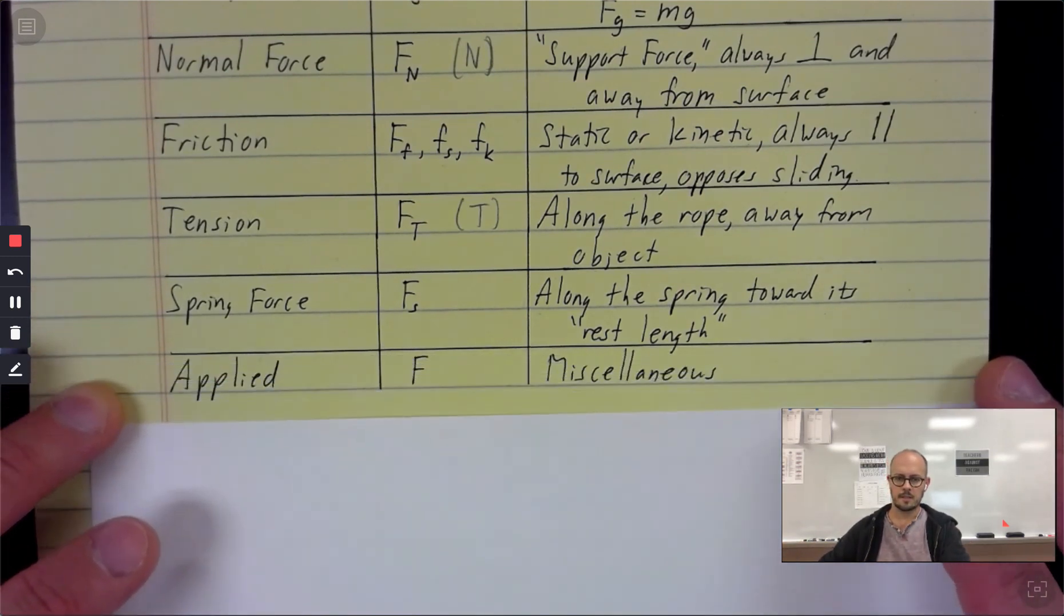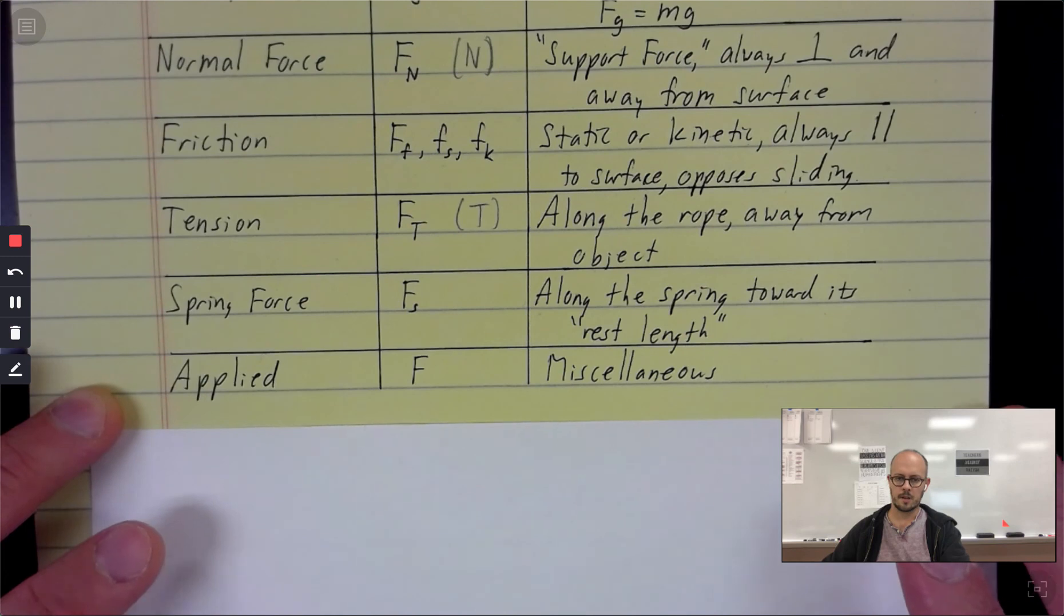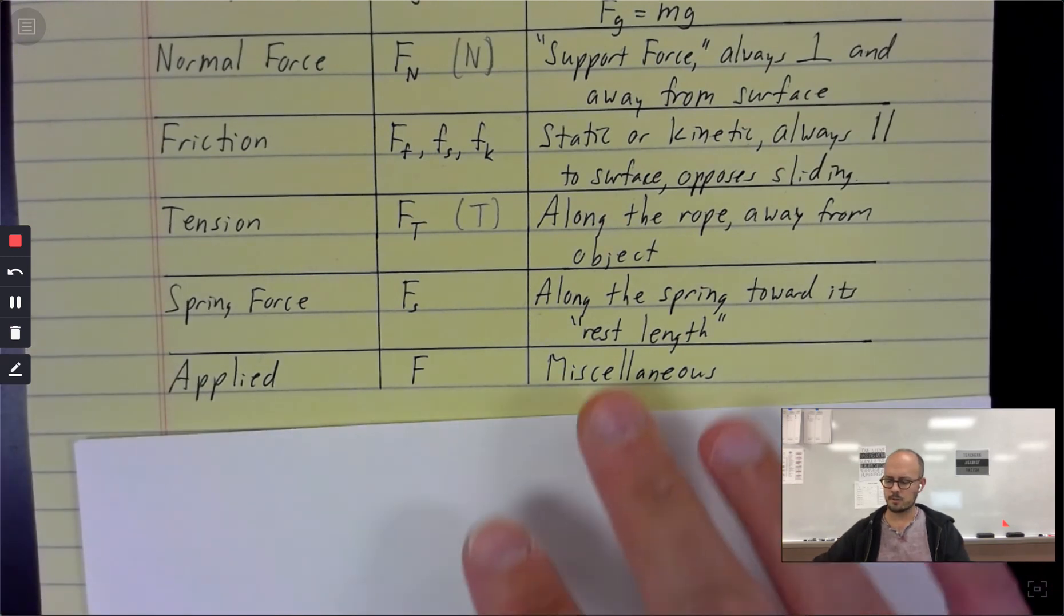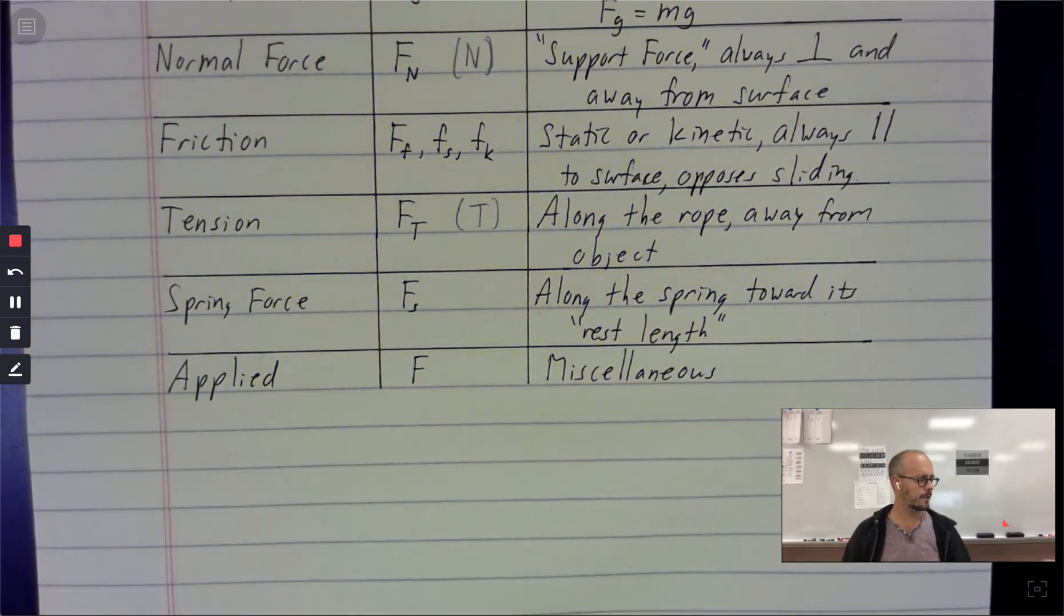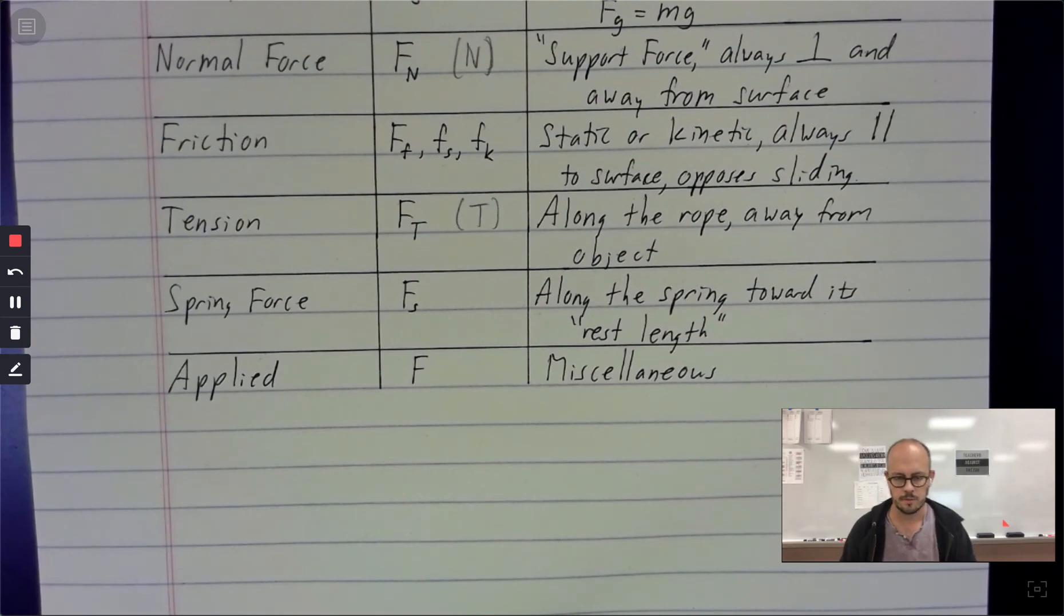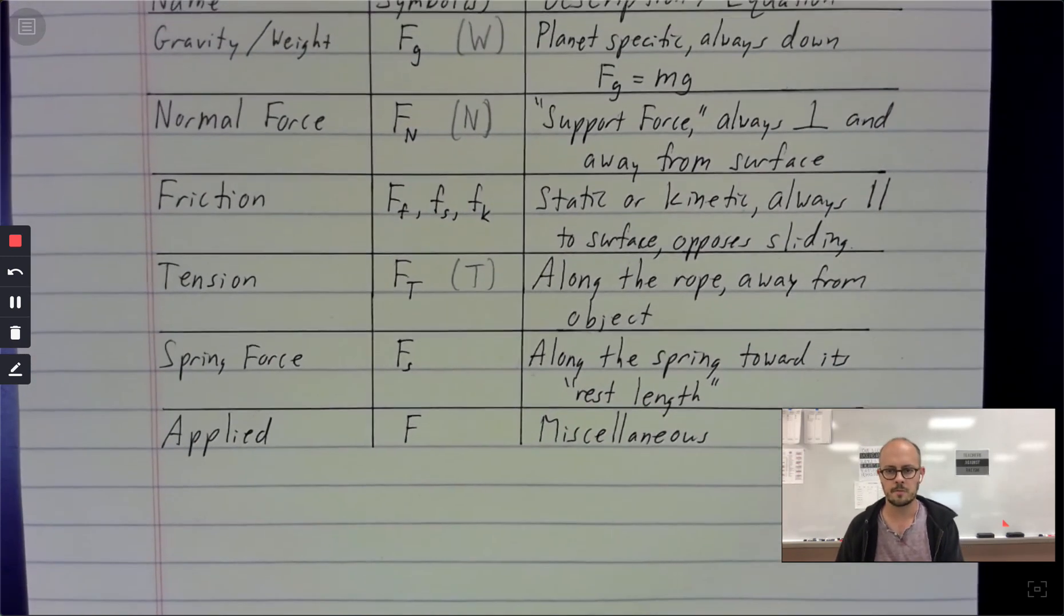And then if there's anything that doesn't fit in a category so far, we just call it an applied force. It gets a generic letter F. We can number forces, F1, F2, F3, et cetera. But it's for something like you go up and you push on this thing. So things that don't fit into categories get the applied force designation.